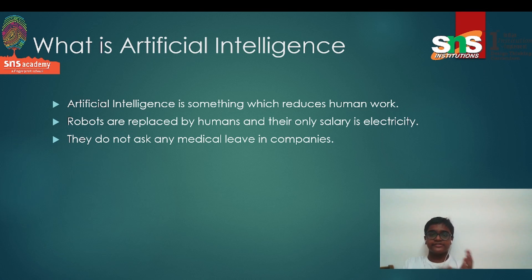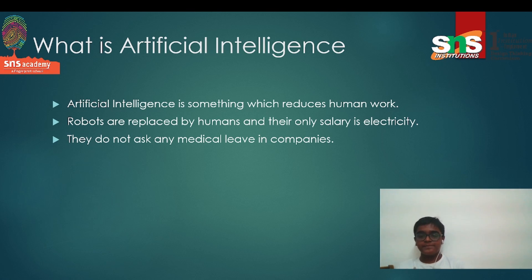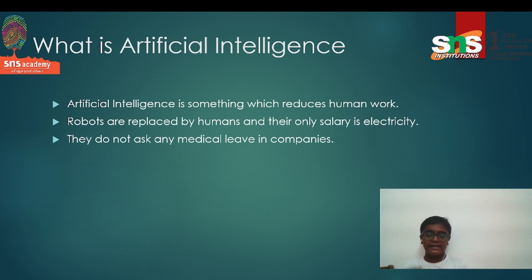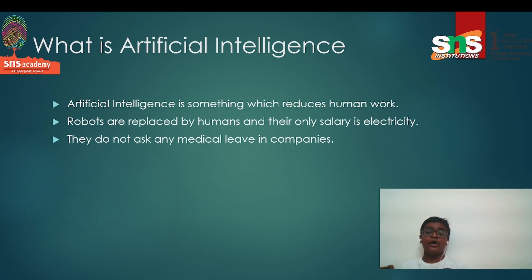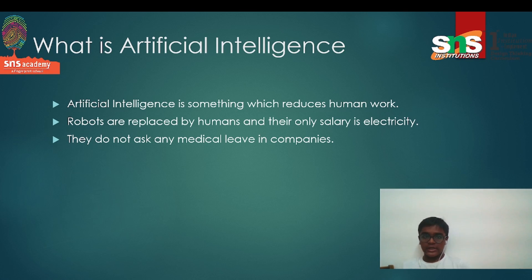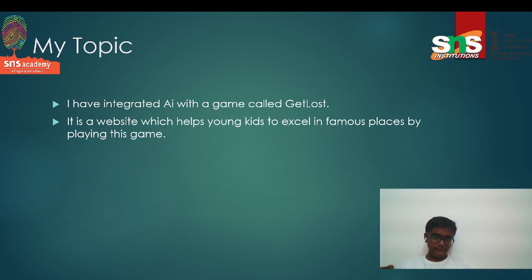Artificial intelligence is something that reduces human work. In the future, humans may become lazy and robots will replace them. The robot's salary is just electricity, so companies don't have to spend money on monthly salaries. Robots also don't ask for medical leave or holidays — that's an advantage of artificial intelligence.